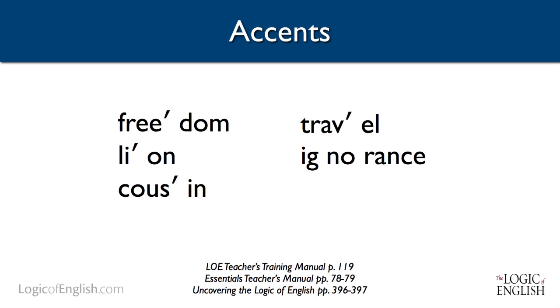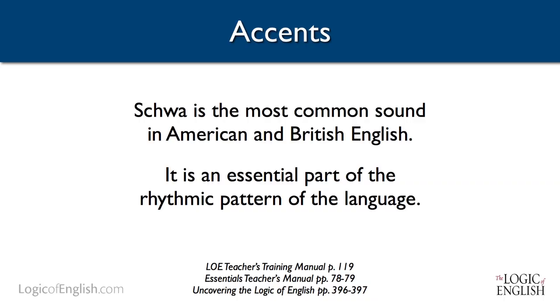'Ignorance' — you can hear the 'i' in 'ignorance' very clearly. So when you're trying to find which syllable is accented in English, you can listen for which syllable has the vowel that's pronounced the most clearly. When we talk about schwa, it's important to understand that schwa is the most common sound in American and British English — it is very, very common.